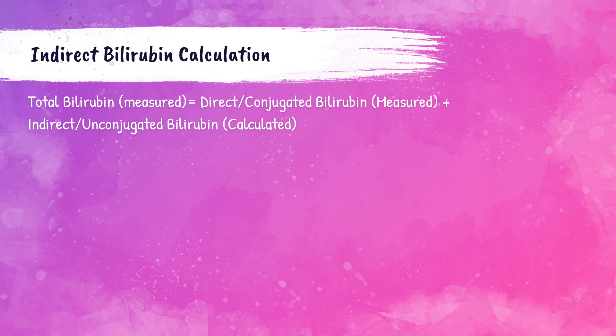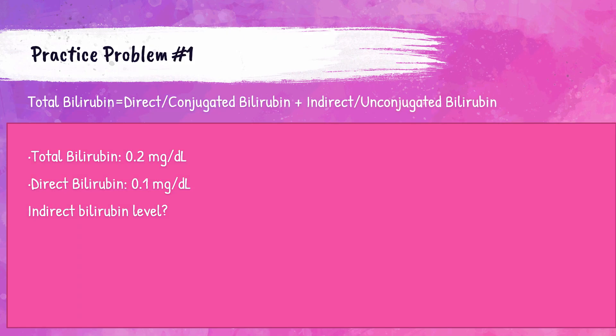The indirect bilirubin calculation is as follows: Total bilirubin equals direct or conjugated bilirubin plus indirect or unconjugated bilirubin. Total and direct are measured, while indirect is calculated. So if a patient comes in and gets a total bilirubin, a direct bilirubin, and an indirect bilirubin ordered, this is how it works.